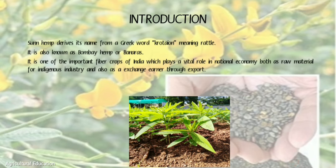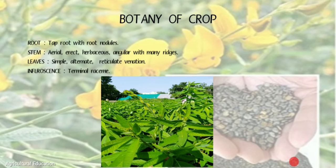Introduction: Sunhemp derives its name from a Greek word 'kroatin' meaning rattle. It is also known as Bombay hemp or Bananas hemp. It is one of the important fiber crops of India, which plays a vital role in the national economy both as raw material for indigenous industry and as a foreign exchange earner through export.